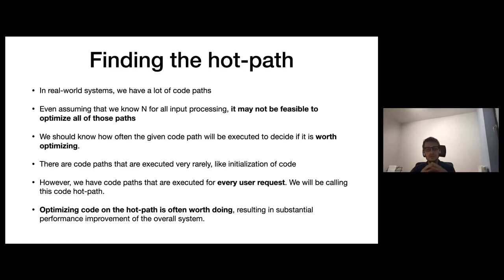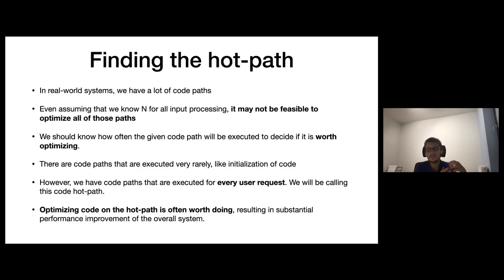We looked at one aspect of input information needed for useful performance optimizations. In real world systems, we have a lot of code paths. Even assuming we know N for all input processing, it may not be feasible to optimize all those paths. We should know how often a given code path will be executed to decide if it's worth optimizing. There are code paths executed very rarely — like initialization. However, we have code paths executed for every user request or almost every. We'll call this the hot path, and optimizing code on this path is often worth doing, resulting in substantial performance improvement of the overall system.